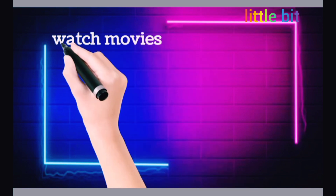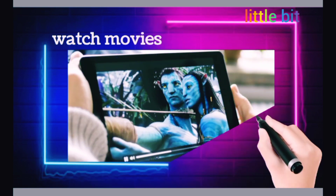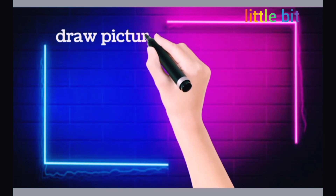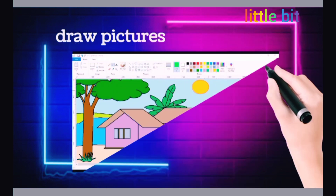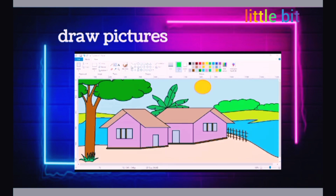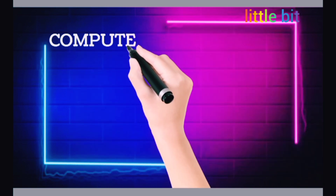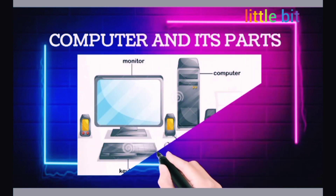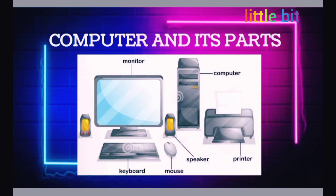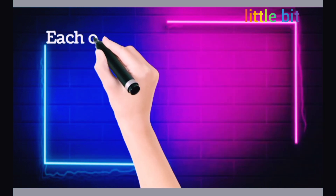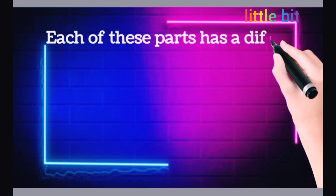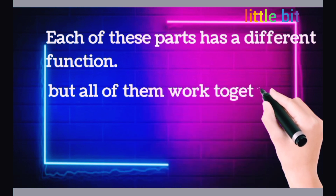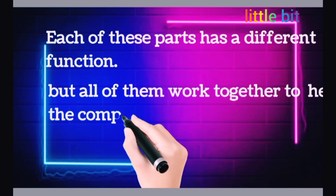We can also watch movies and draw pictures. This is your computer. Now let's look at the computer and its parts. Each of these parts has a different function, but all of them work together to help the computer.